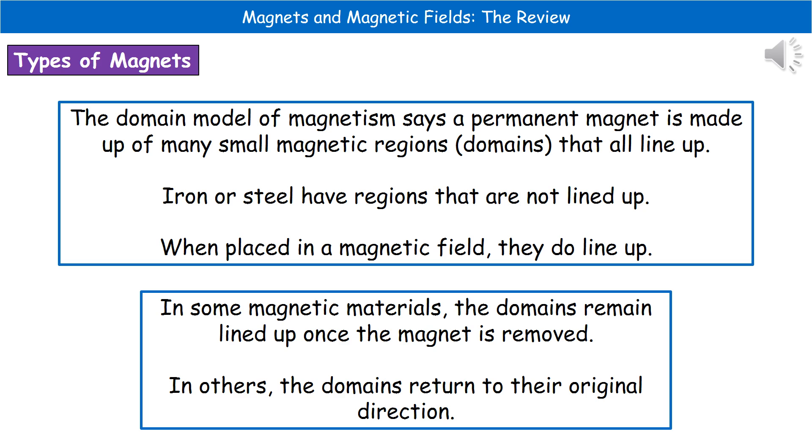Now, one of the models to explain magnetism is what's called the domain model of magnetism. And what that actually does is it says that a permanent magnet is made up of many small magnetic regions, which they refer to as domains that are all lined up. Now, what we find if we look at another material that is magnetic, something like iron or steel, for example, then they've got regions that are not lined up. But when we put them into a magnetic field, those regions will then line up. Hence, it becomes magnetic at that point.